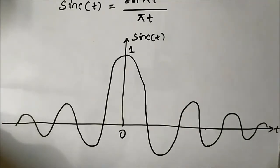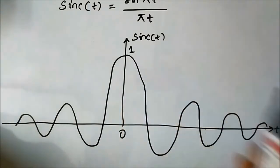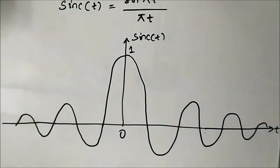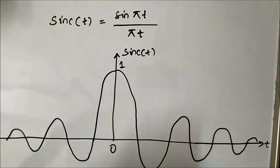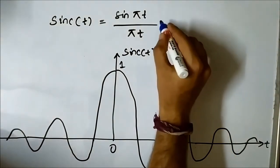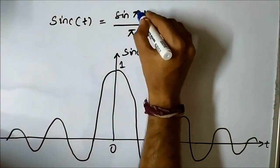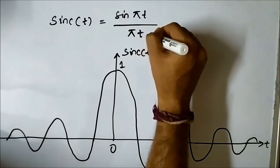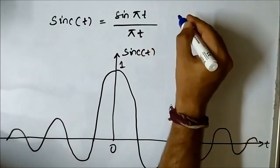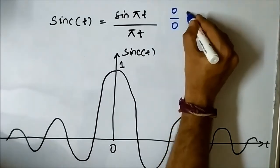Now, how do we know that at t equals 0 the value of the sinc function is equal to 1? If we put t equals 0, it will be sin(0) / (π × 0), which is 0/0. We know sin(0) is equal to 0, so we get the 0/0 indeterminate form.